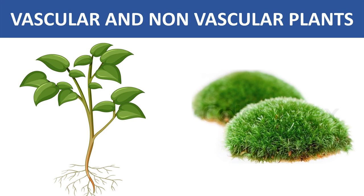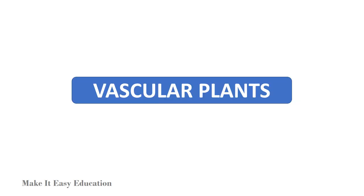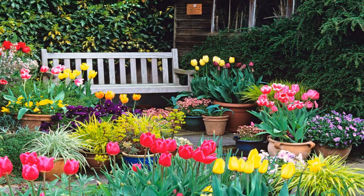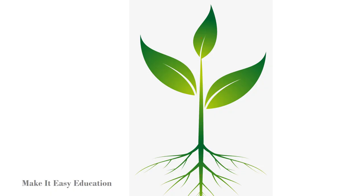Plants are divided into vascular and non-vascular plants. Vascular plants are the largest group in the plant kingdom and are known as higher plants. These plants have a well-developed system for transporting water and food.